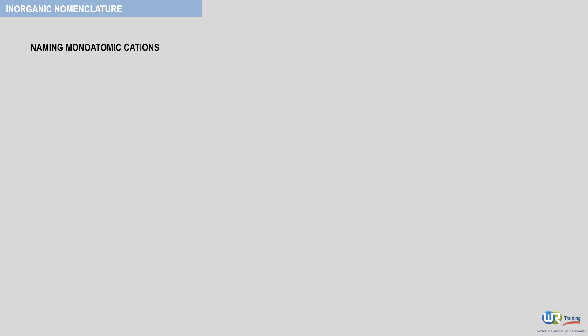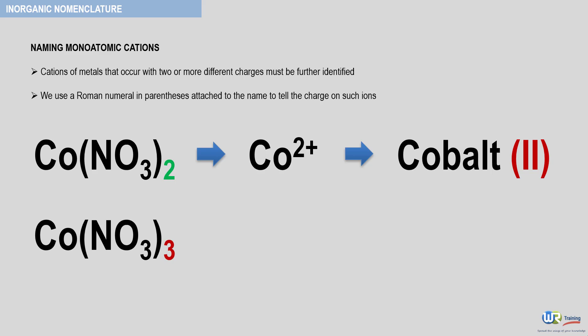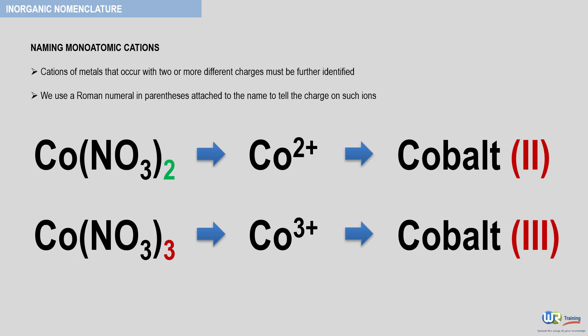Cations of metals that occur with two or more different charges must be further identified. We use a Roman numeral in parentheses attached to the name to tell the charge on such ions. Therefore, for this compound where the cobalt is Co2+, the corresponding name will be cobalt(II). And for this compound here, where the cobalt ion is Co3+, the corresponding name will be cobalt(III).